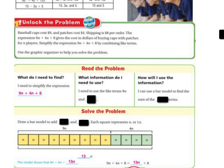What information do I need to use? Well I need to use the like terms 9n and 4n, because they're the ones who are like terms. How do I use the information? Well I can use a bar model to find the sum of the like terms.